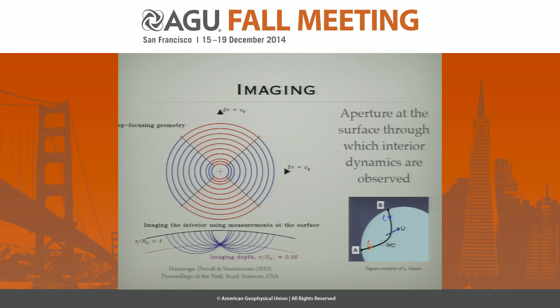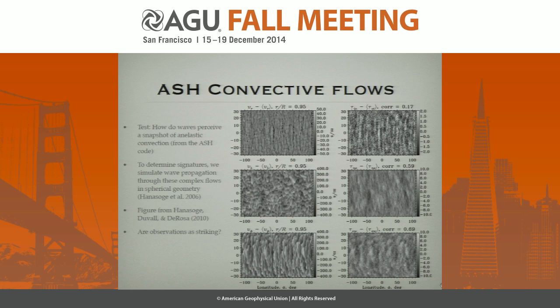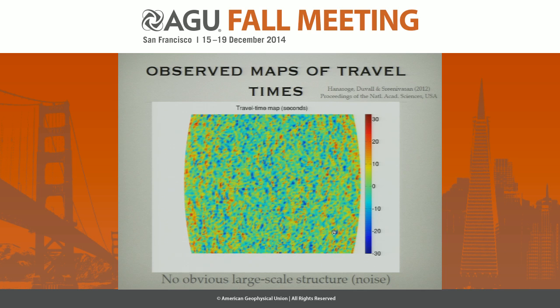This illustrates the symmetry breaking: wave travel time from A to B is not the same as from B to A, then there is a flow. We test it — we take complex flows from one of these ASH simulations, shoot waves through it, measure wave travel times, and the travel time maps are correlated with radial, latitudinal, and longitudinal flows. If we were to measure travel times on the sun that looked like this, it would be a paper in Nature. Sadly, that is not the case. A typical travel time map is essentially, for all practical purposes, completely consistent with noise.